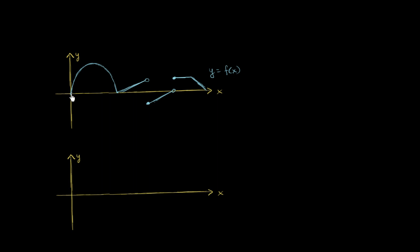Right over here at this point, the slope is positive — and actually, it's a good bit positive. Then as we get larger and larger x's, the slope is still positive, but it's less positive. All the way up to this point right over here, where it becomes 0.